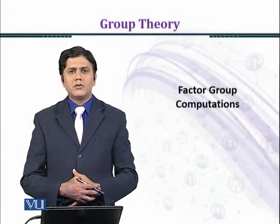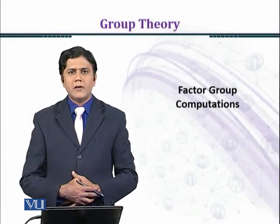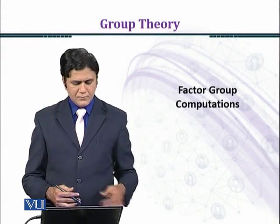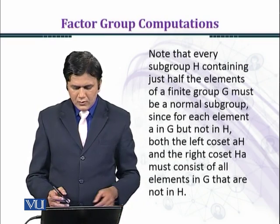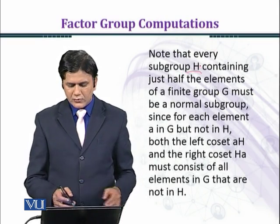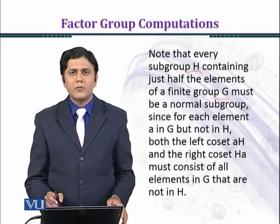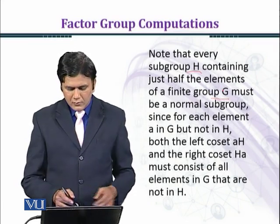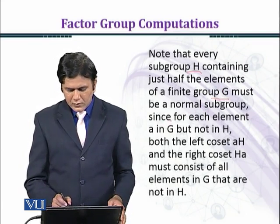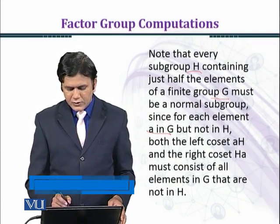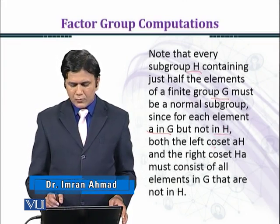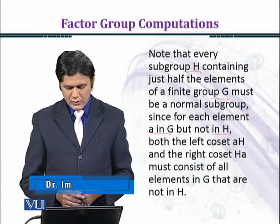In this module we shall consider an example of a vector group having just two elements. Note that every subgroup H containing just half the elements of a finite group G must be a normal subgroup, since for each element a in G but not in H, both the left coset aH and the right coset Ha must consist of all elements in G that are not in H.